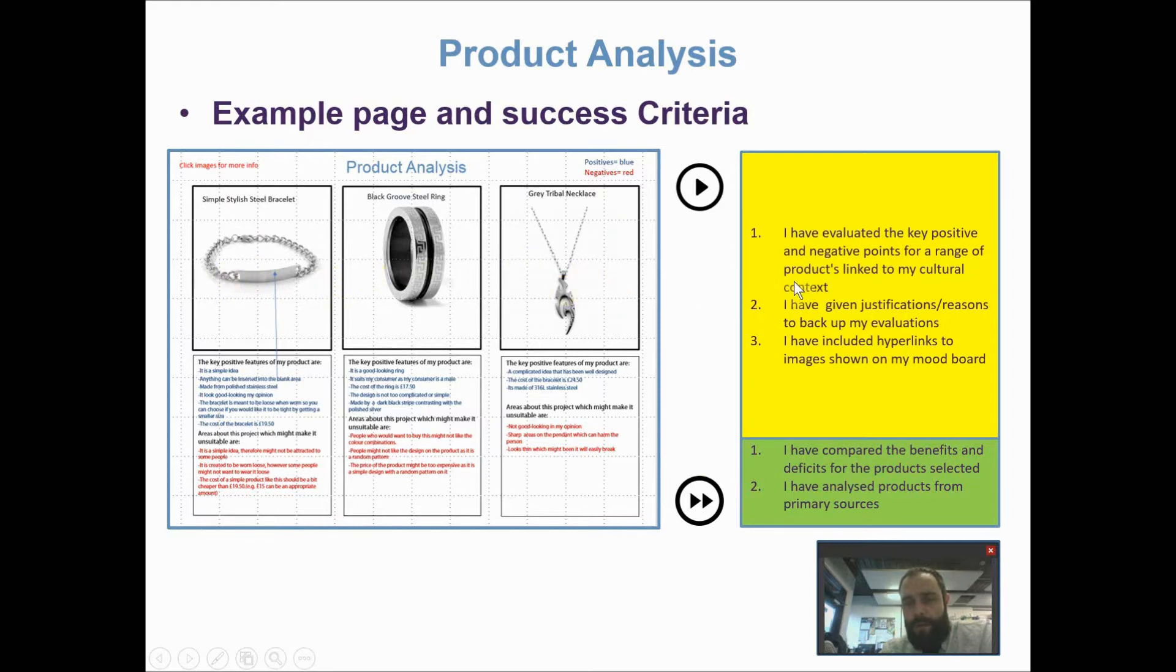What I ask of my students is to basically come up with an evaluation of the key points whether it's positive or negative about the product. In this case these products are obviously linked to the chosen context or the design brief that they're working on. A nice tip for the examiner or for the moderator is to do a bit of color coding here, perhaps put a key on the page so it's clear what are the positive and negative features.